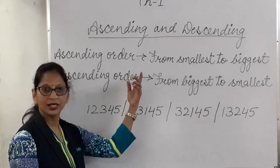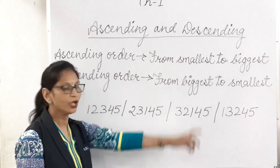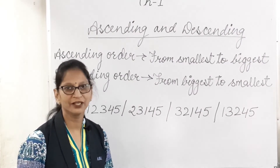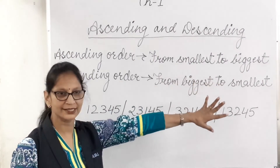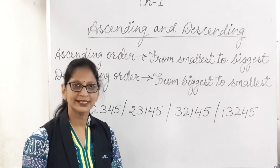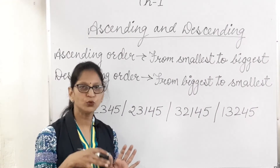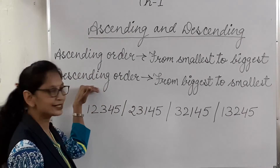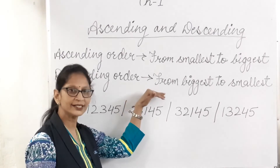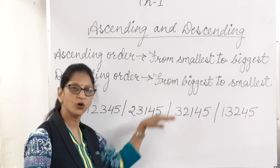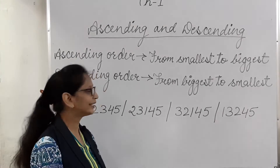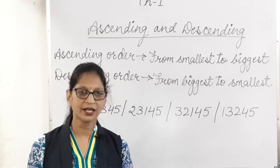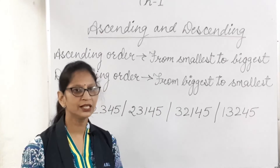Now our last topic is ascending and descending order. What is ascending order? Ascending order means ordering the numbers from smallest to biggest — that means we start from the smallest number and then move on to the biggest number. What is descending order? Descending order means ordering the numbers from biggest to smallest — we start from the biggest number and then move on to the lowest number.